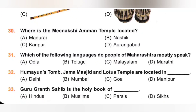32nd. Humayun's Tomb, Jama Masjid and Lotus Temple are located in: A. Delhi, B. Mumbai, C. Goa, D. Manipur. Humayun's Tomb, Jama Masjid and Lotus Temple are all located in Delhi. Option A is the correct answer.